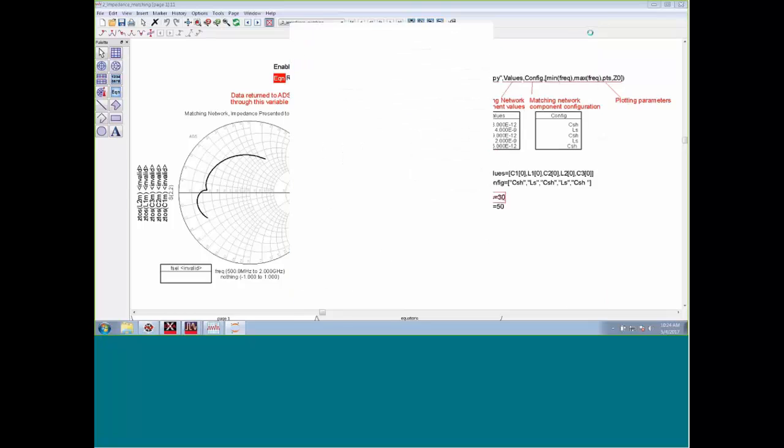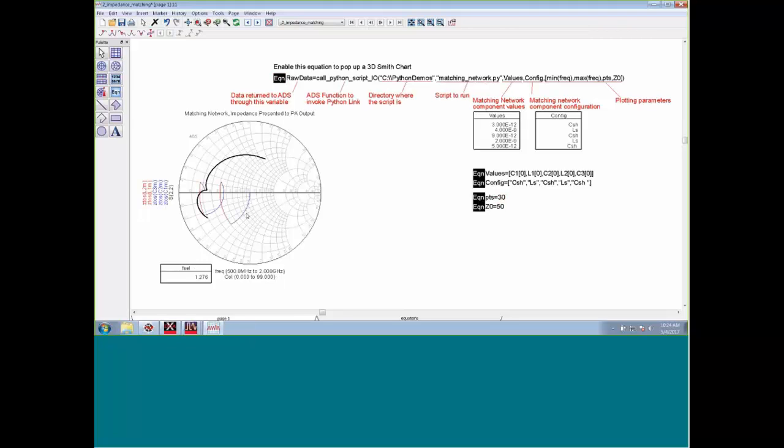When I close this plot, automatically the data will come back into ADS. Whatever set of data that I had selected, that's an option in there. I can put that back into my simulation. If you wanted to look at that particular frequency, how the capacitors and inductors are moving the impedance, you can do that and it will return back to ADS.